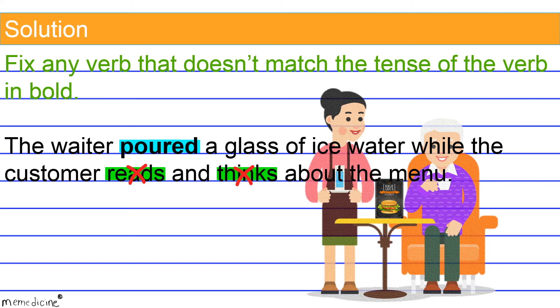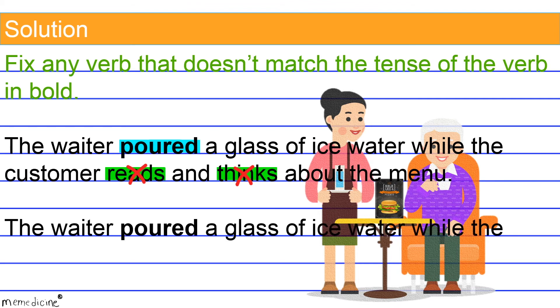because this creates inconsistency in the overall tense of the sentence. Change reads and thinks to their simple past tense forms to restore consistency. Here you have it,